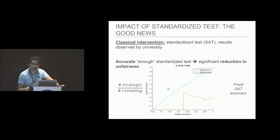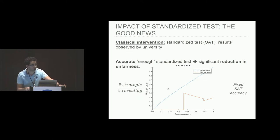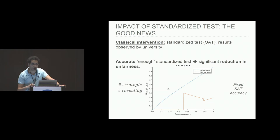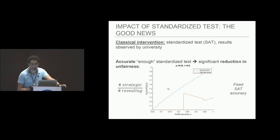Next, we look at the effect of a classical intervention: asking students to take the SAT and reporting that score to the university. We show that, perhaps not surprisingly, if the SAT score is accurate enough, it has the effect of reducing inequalities between a revealing and a strategic school. The figure plots unfairness between a revealing and a strategic school as a function of grade accuracy at a fixed SAT accuracy. The blue curve measures unfairness in the absence of an SAT score, and the orange curve measures unfairness in the presence of one. The blue line is well above the orange line in most cases, meaning unfairness is much worse without an SAT score.